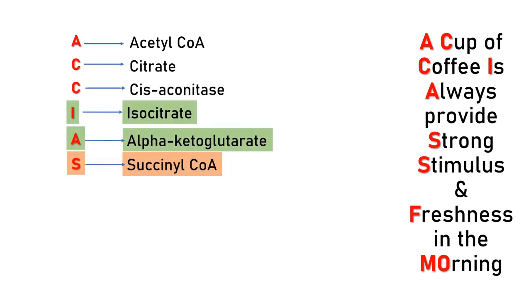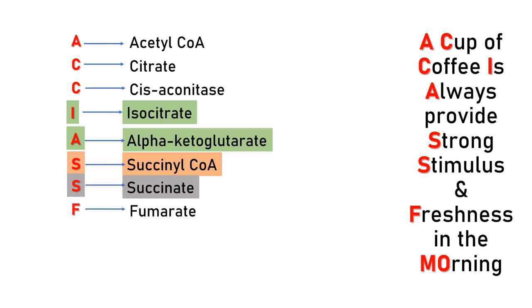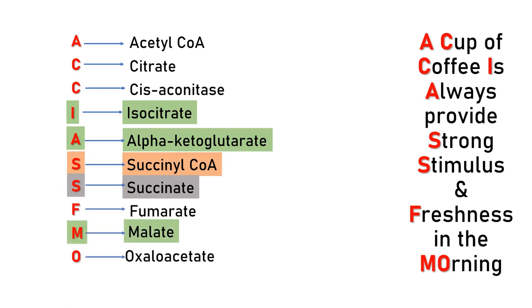I is for isocitrate, A for alpha-ketoglutarate, S for succinyl-coenzyme A, another S for succinate, F for fumarate, M for malate, and O for oxaloacetate — which is condensed with acetyl-coenzyme A to restart the cycle.